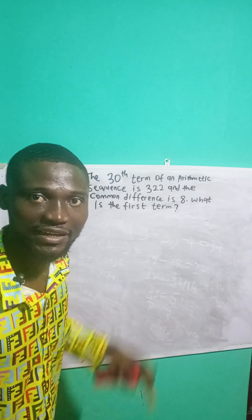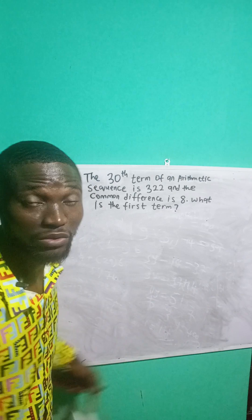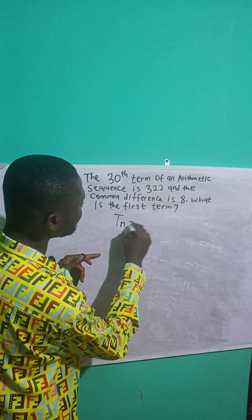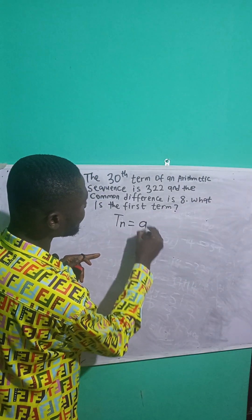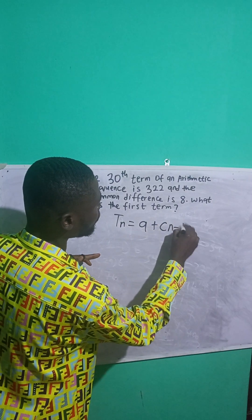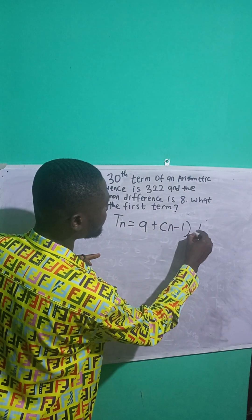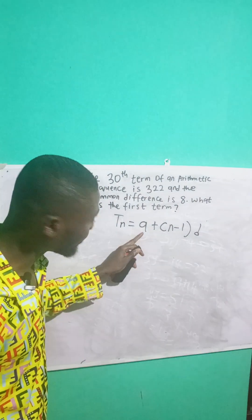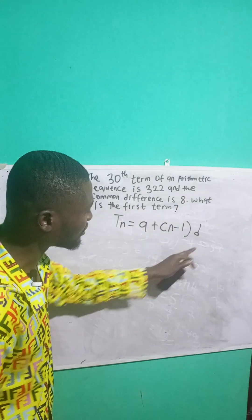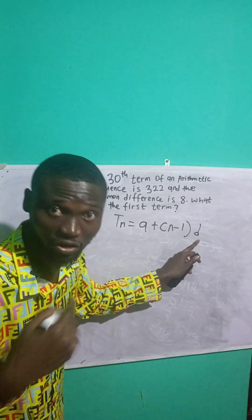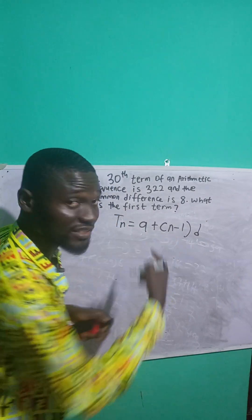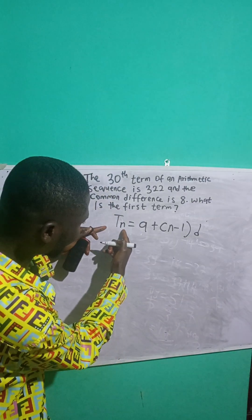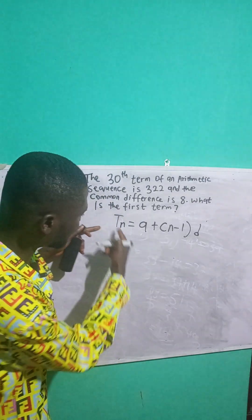Let's get the n-term of an arithmetic sequence, which is given by this formula. The n-term is equal to a plus (n minus 1) times d. This is the formula. Here, a is the first term, d is the common difference, and n is the number of terms.